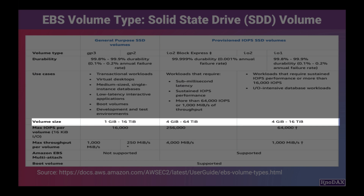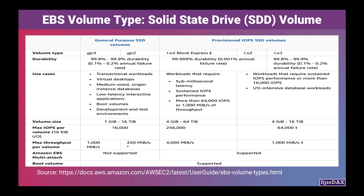Let's talk about volume size. General-purpose SSDs provide volume size in the range of 1 to 16 terabytes, while provisioned IOPS SSD volumes provide a much larger size — up to 64 terabytes, with a minimum size of 4 GB. Note that the screenshot uses tebibytes, which is more accurate as it uses the binary prefix (base 2). In informal communications you may hear terabyte, megabyte, or gigabyte more commonly, and I will also use those common terms just to make it easier.